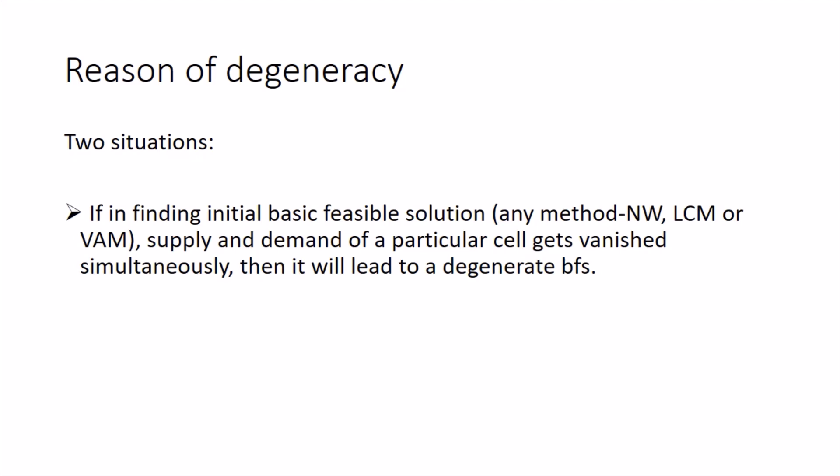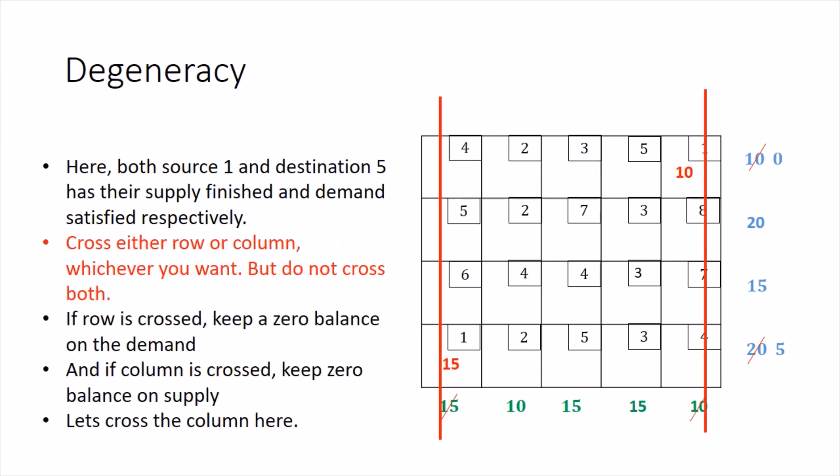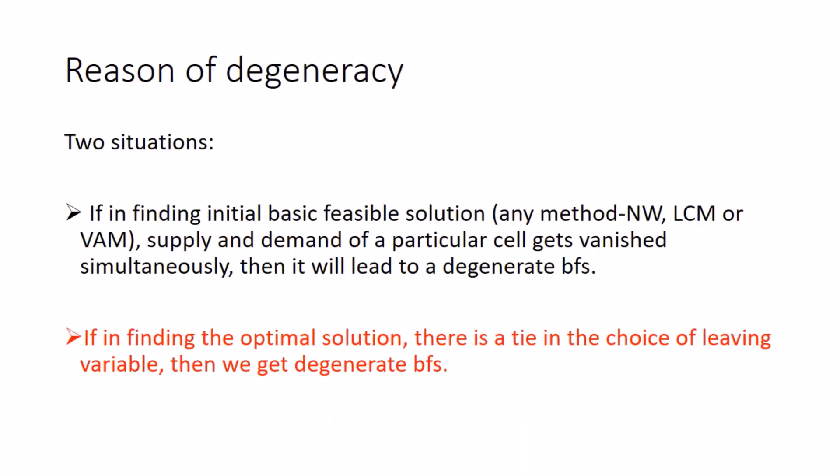The first situation arises when using any initial solution method — north-west corner, least cost, or VAM — and the supply and demand vanish simultaneously. For example, in the least cost method example from our previous video, the allocation of 10 in cell (1,5) causes supply and demand of 10 units to simultaneously vanish. In this case we cross out the column and retain a zero on the supply side, and that retained zero enters the system as a basic variable, giving a degenerate basic feasible solution.